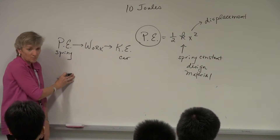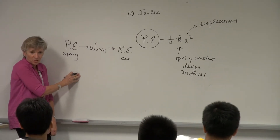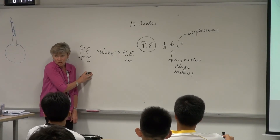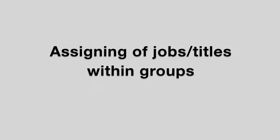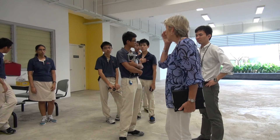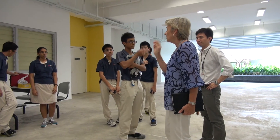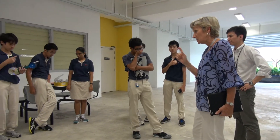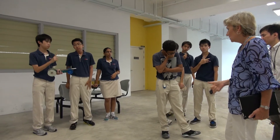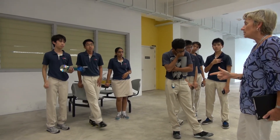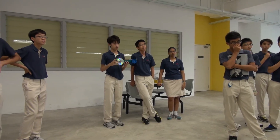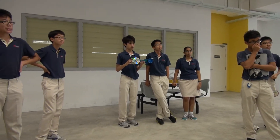You've already got a limitation — you've only got so much energy. First constraint. Second of all, you need to assign jobs. Obviously, somebody needs to start the mousetrap, somebody needs to be videotaping it, somebody needs to be timing.